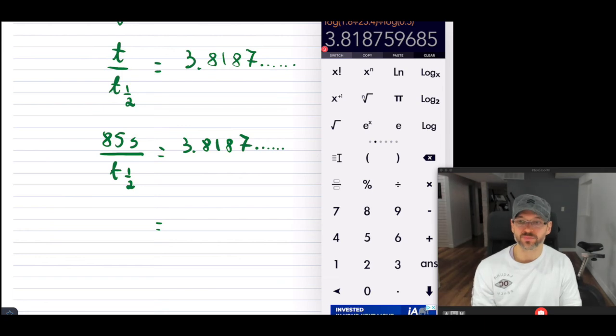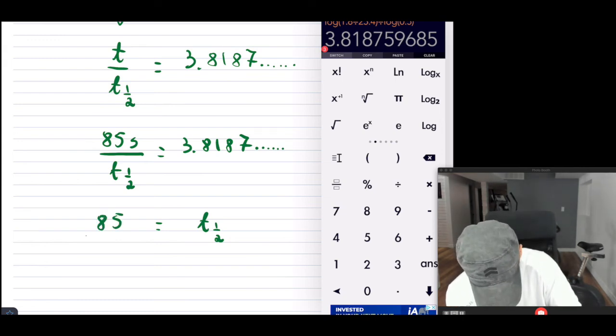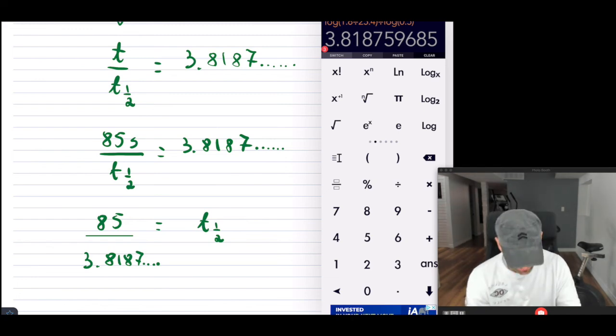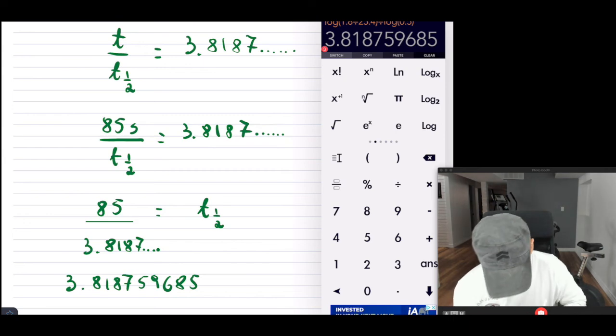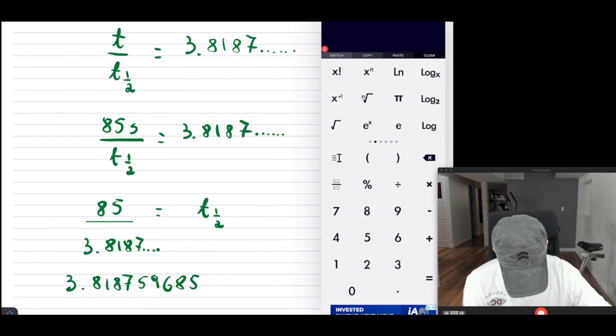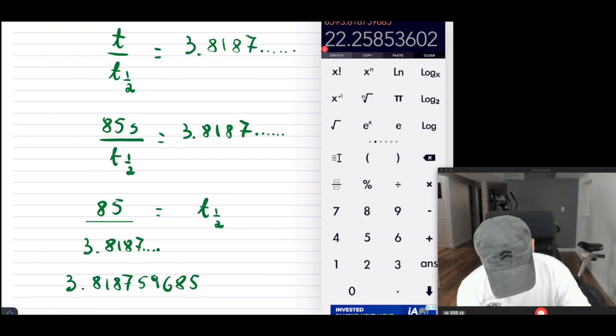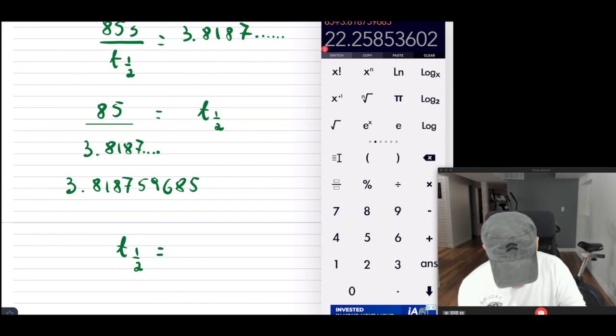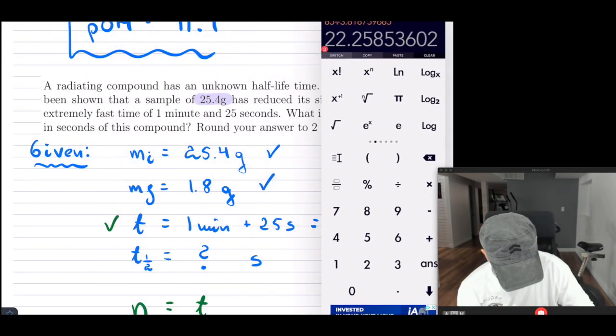So now, because I want to be as accurate as I can here, I'm going to write this out for myself, 3.818759685, so that's just from the calculator. So let me clear this, and this is 85 divided by 3.8187596885. Now, you might say, do I have to keep all of those? Keep it until you get your final answer. If you start rounding too early, you might be a little bit off. So this is 22, so half-life is 22 point, I know I have to round this to something. Round your answer to two significant figures. So there you go. That's all I have to do. So that is my half-life time.